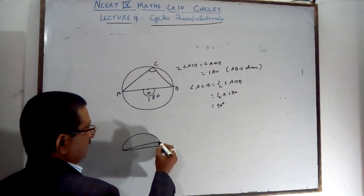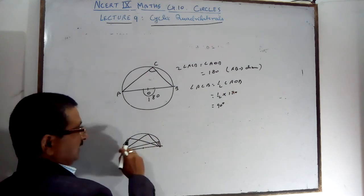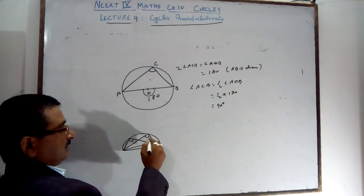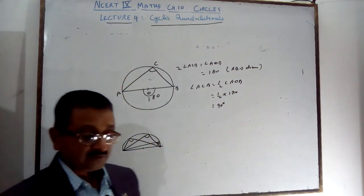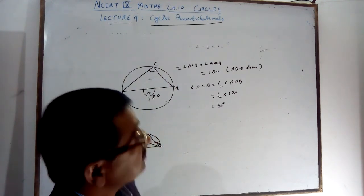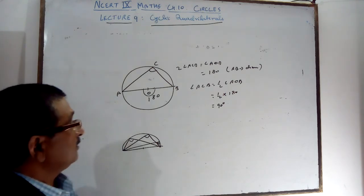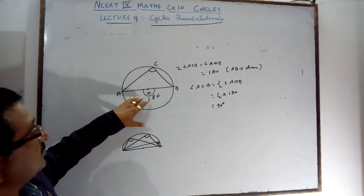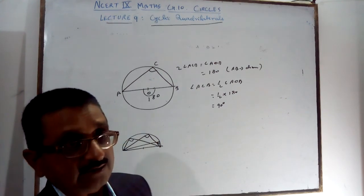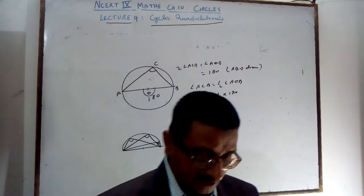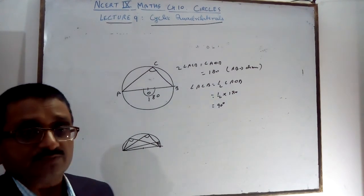The angle in a semicircle is always 90 degrees, wherever the point C is on the semicircle. Since angles in the same segment are equal, all such angles will be 90 degrees. The angle at the center is twice the angle in the remaining part — this proves that the angle in a semicircle is 90 degrees, and the opposite angle sum of 180 confirms a cyclic quadrilateral. We will see examples in the next session. Thank you.